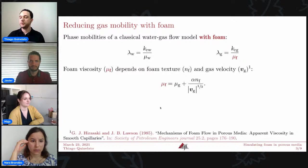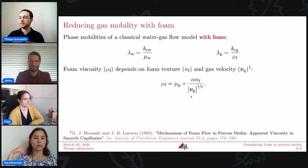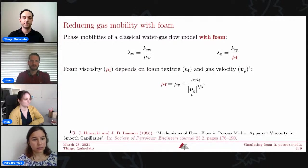So following Hirasaki and Lawson, the foam viscosity, which we represent as mu_wf, will depend on foam texture, this n_f, and gas velocity, v_g. So the foam texture, this n_f, is also known as foam density or bubble density, and it's a variable in this model, and it can be defined as the number of bubbles per unit volume. And here we can see that the foam viscosity depends on its velocity, so we expect a non-Newtonian behavior in this flow.